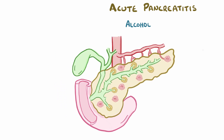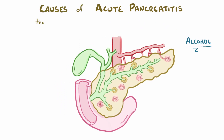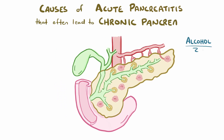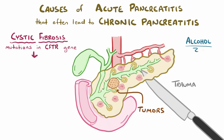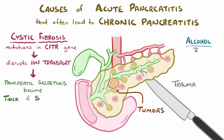In addition to alcohol abuse, other known causes of acute pancreatitis that frequently turn into chronic pancreatitis include tumors, trauma to the pancreas, and cystic fibrosis. The term cystic fibrosis refers to the pancreatic cysts and fibrosis that develop in patients with mutations in the CFTR gene. That gene encodes for an ion transporter, and mutations in that transporter cause the pancreatic secretions to become thick and sticky, leading to obstruction of the ducts. Importantly, cystic fibrosis is the main cause of chronic pancreatitis in children.